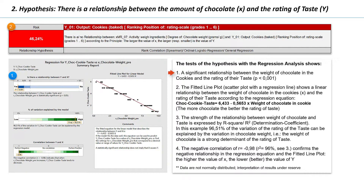First, we again get a significant result with a p-value smaller than 0.001 at a predetermined 5% significance level alpha. The fitted line plot — a scatter plot with a regression line — shows the negative relationship between the amount of chocolate in the cookie and the rating of its taste. The more chocolate in a cookie, the lower the grade value, meaning the better the rating. The regression equation expresses this relationship numerically. With the equation: taste rating of chocolate cookie equals 6.4 minus 0.57 times weight of chocolate, we could forecast the taste rating based on the amount of chocolate in a cookie.